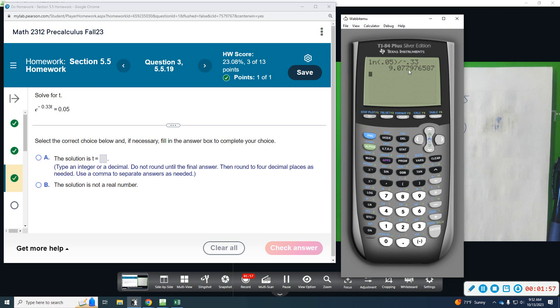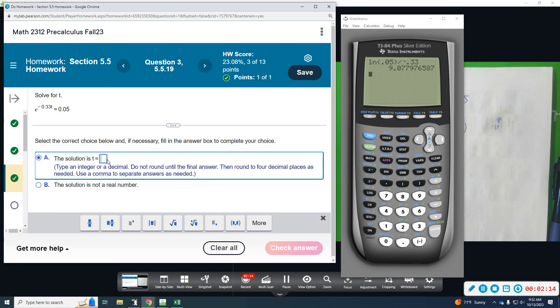So we have 1, 2, 3, 4. The fifth place is a 7. It is bigger than 5, which means this 9 would round up to 10, which means that would carry over and then round this 7 up to an 8. So we're looking at 9.078.